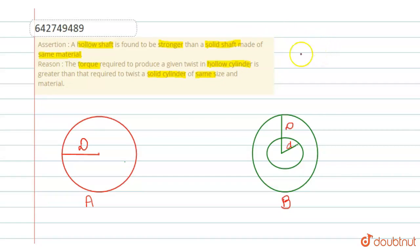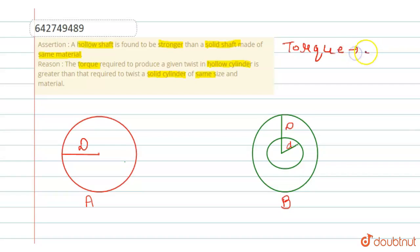To solve this, we first have to understand what torque is. Torque is basically a kind of force required to rotate an object or a body around an axis.